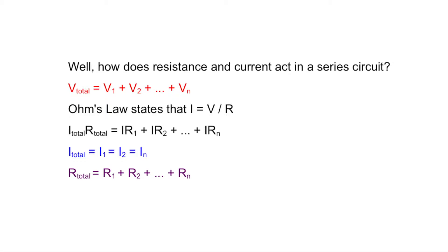Now let's see how resistance and current is affected. Starting with Ohm's law: current is equal to voltage over resistance. Substituting current times resistance for voltage — current through each resistor is the same. Therefore, current total equals current sub 1, equals current sub 2, and so on. From this, the total resistance is equal to the sum of each individual resistor.